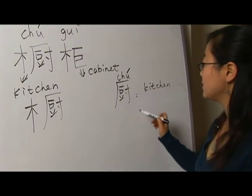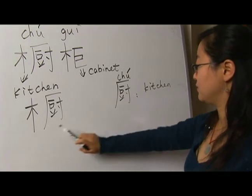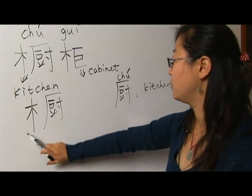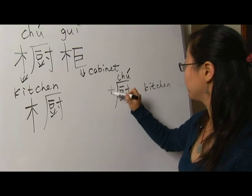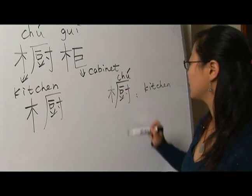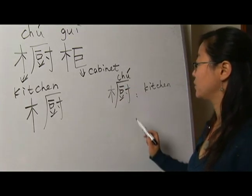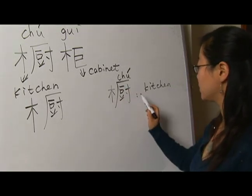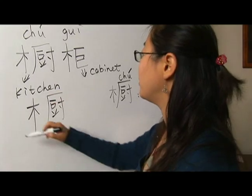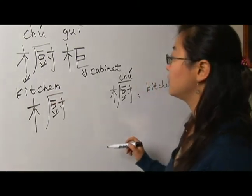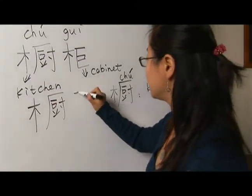And you can see, it's very meaningful. We add one more wood radical to the character 厨, so that you know that cupboard — they are made of wood.